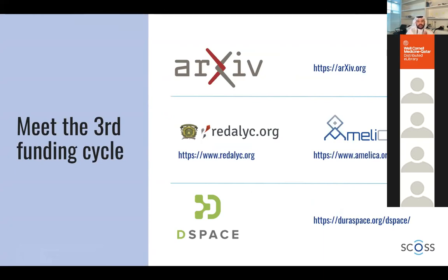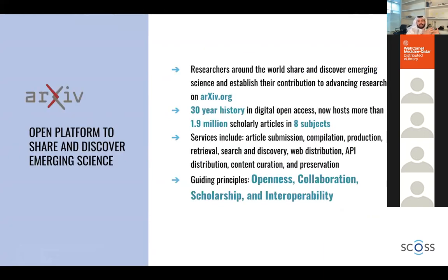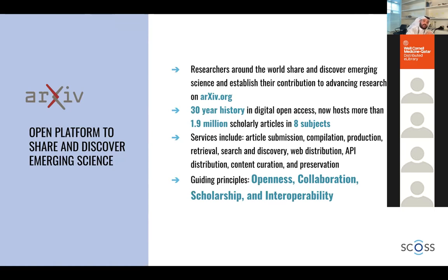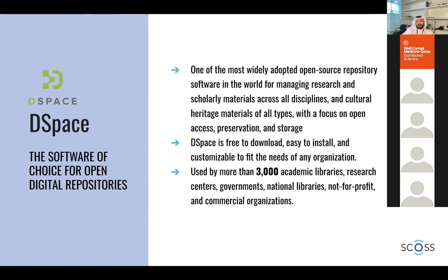The third cycle was launched recently featuring arXiv, Redalyc America, and DSpace. ArXiv, with Cornell, is one of the most important preprint servers in physics and mathematics — it has a 30-year history and two million study articles across eight subjects. Redalyc América is a platform of open access peer-reviewed journals from 600 institutions across 31 countries, vital in Latin America. DSpace supports infrastructure for 3,000 academic libraries worldwide. QSpace, Qatar University's repository, is built on DSpace — so if anything happens to DSpace, QSpace is affected.